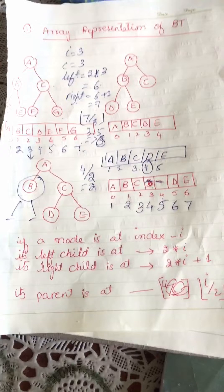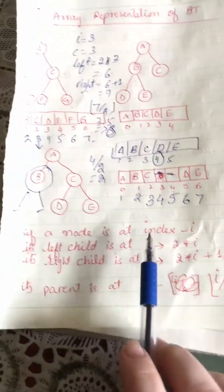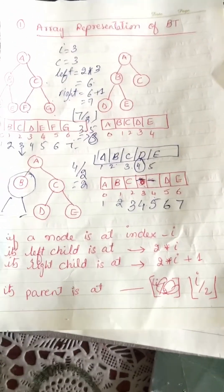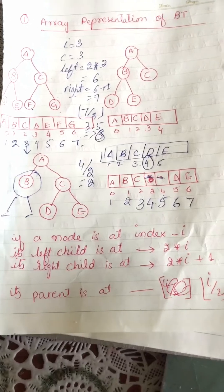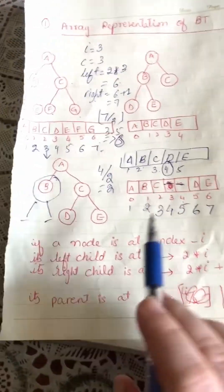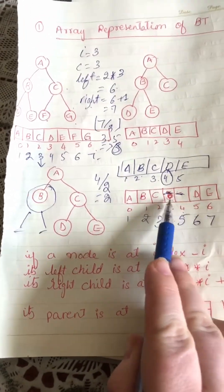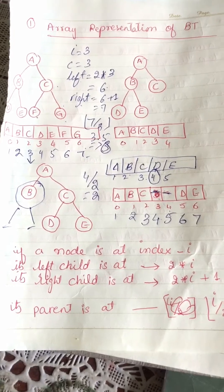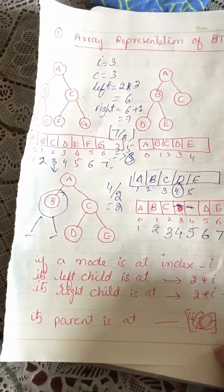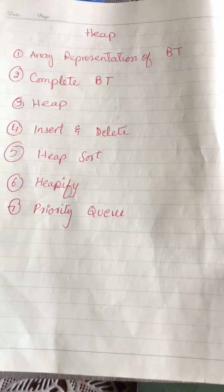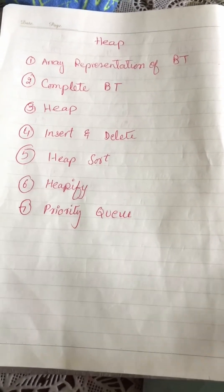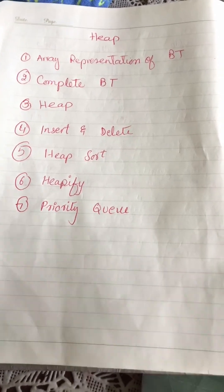This is how you represent a binary tree in an array: fill all elements level by level using the formulas, and where you find no child, simply put a blank in the array. I hope this is clear. If you have any questions, ask in the comment section or in the WhatsApp group. In the next video we will discuss complete binary tree. Thank you so much.